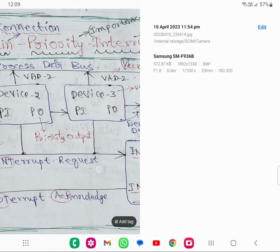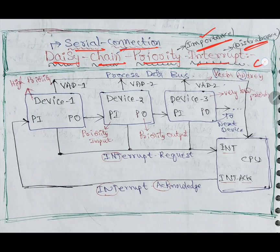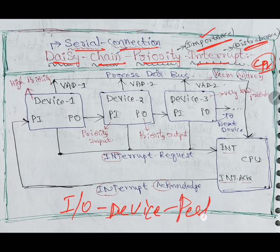Coming to our topic: daisy chain is the second type of priority interrupt. First one is parallel priority interrupt — that is nothing but serial, which I am explaining with the cursor. I will put a mark also. Daisy chain is nothing but serial connection — serial priority interrupt. Priority means importance; disturbance to the CPU, which is the processor, the brain of the computer. All input/output devices — peripheral devices — will disturb the CPU so that it decides which work should be done first.